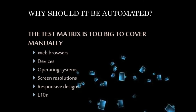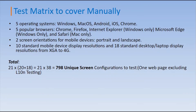Let me show you an example. If you decide to cover the test matrix manually, you need to consider five operating systems: Windows, Mac OS, Android, iOS, and Chrome OS. Then five popular browsers: Chrome for all operating systems, Firefox for all operating systems, Internet Explorer for Windows only, and Safari for Mac only. You also need to consider two screen orientations for mobile devices — portrait and landscape — plus ten standard mobile device display resolutions and 18 standard desktop and laptop display resolutions, from XGA to 4K.